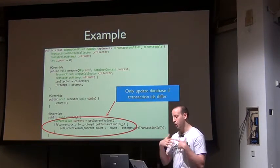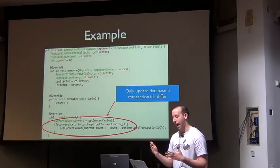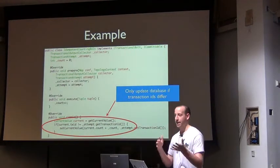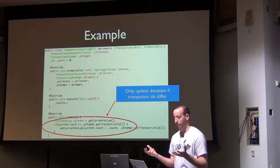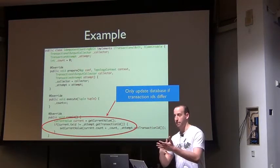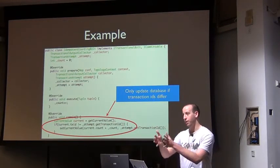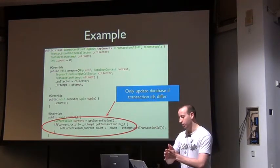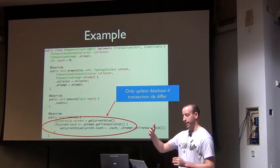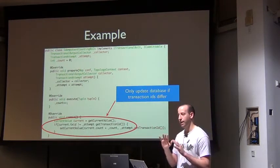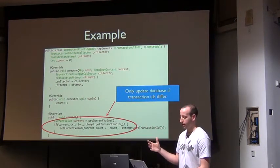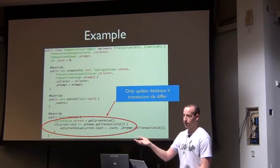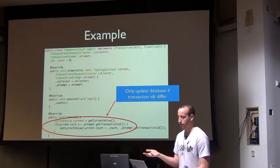The idea is that you only update the count if your transaction ID is different from what's stored in the database. This enables idempotent counting because of the strong ordering of commits. For example, if you go to commit and half the tasks succeed and half fail, on retry the tasks that already succeeded will see the ID is already there and do nothing, while the ones that failed will see the old transaction ID and finish the commit.